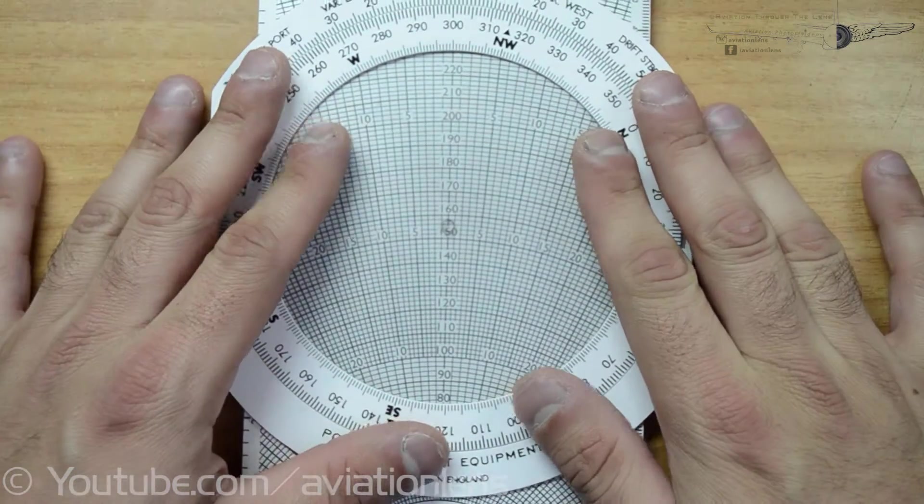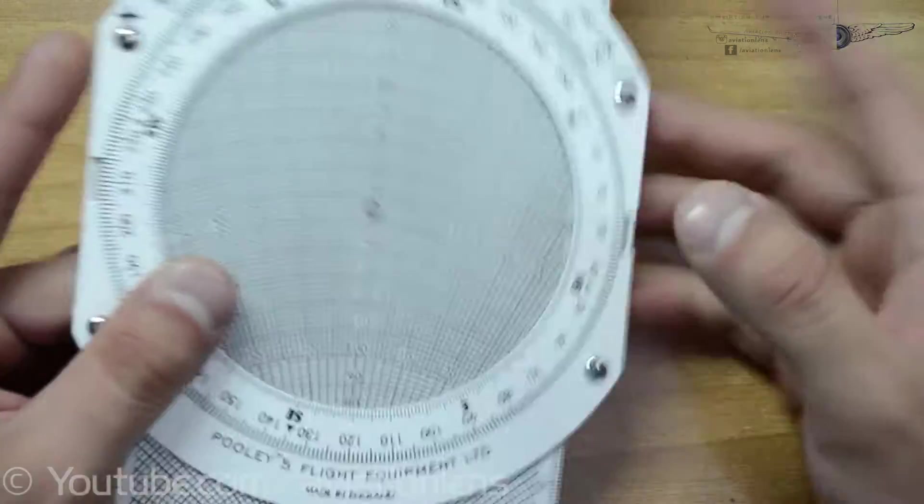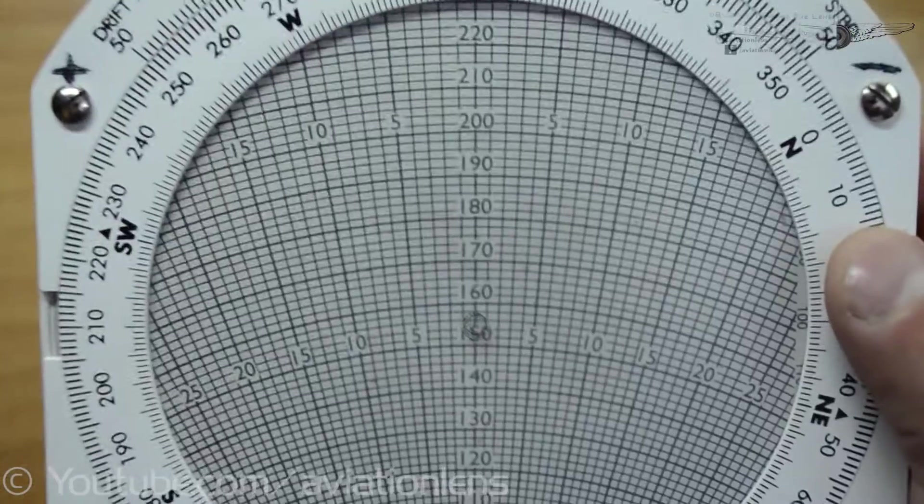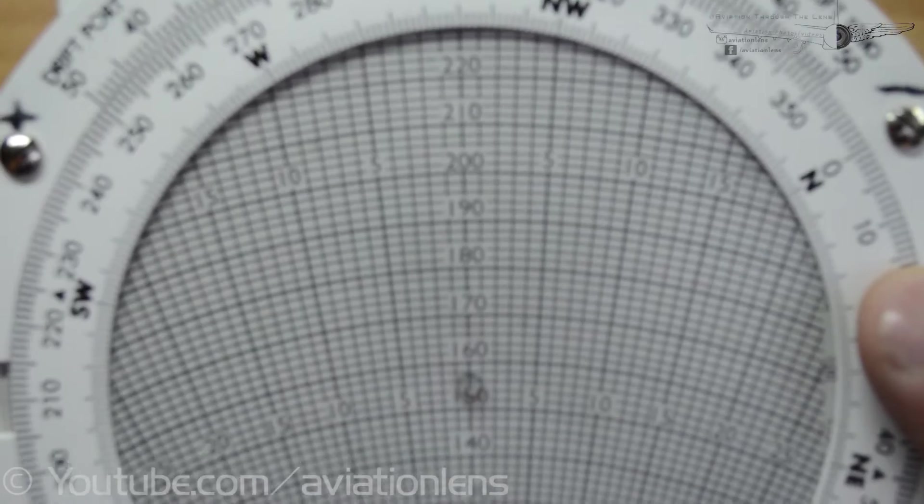So the first step is to put our TAS to the center dot. So 155 on the center.